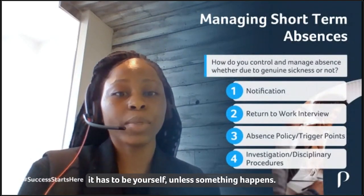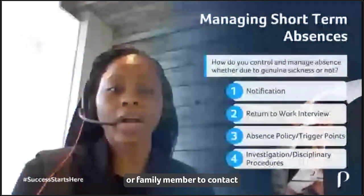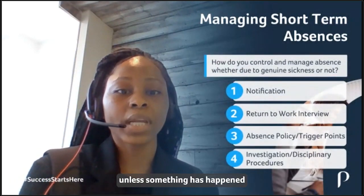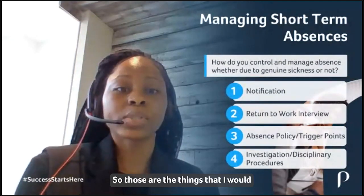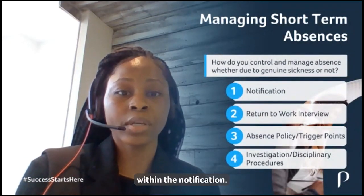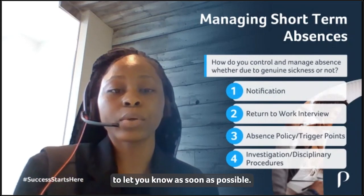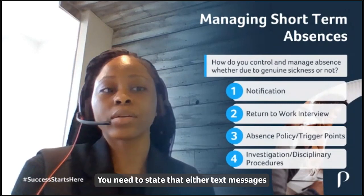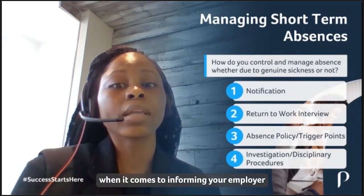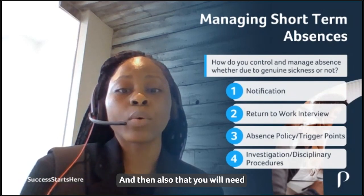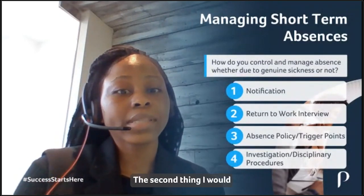Another thing I would suggest within the absence management policy regarding notifications is that it has to be the actual employee themselves. If I'm out sick today, I cannot get a friend or family member to contact unless something has happened where I'm personally unable to contact my employer. To recap: provide a time they need to contact or as soon as possible; state that text messages are not an acceptable notification method; and require personal notification from the actual employee who is out sick.